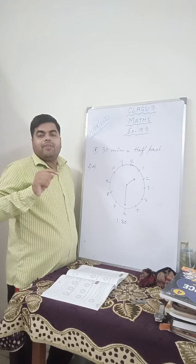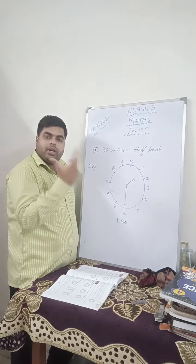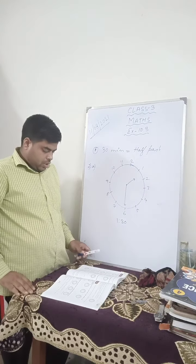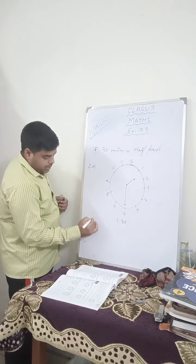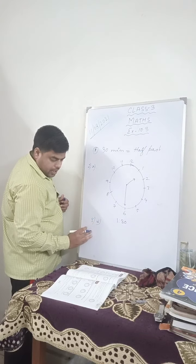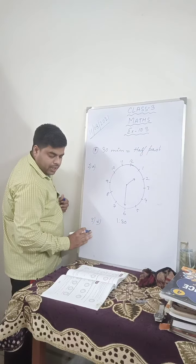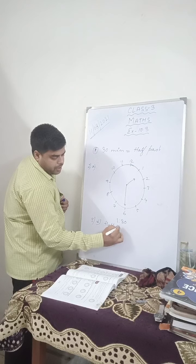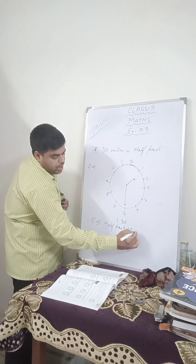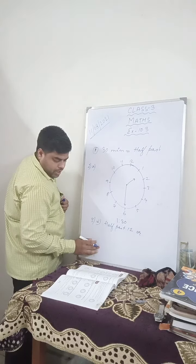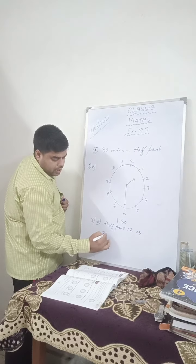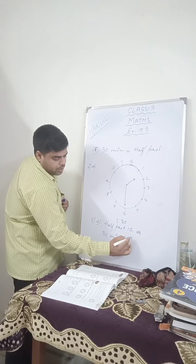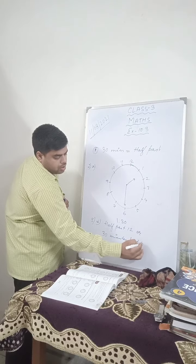Because half past means 30 minutes — it has already passed, so half past 5. Question number D: 12:30 is also written as half past 12, or you can write 30 minutes past 12.